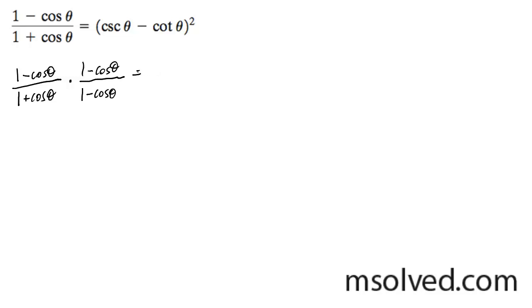Multiply this out. I'm going to get 1 minus 2 cosine theta plus cosine squared theta, all of this over 1 minus cosine squared theta.